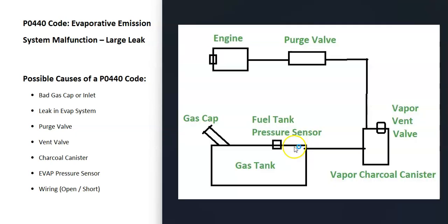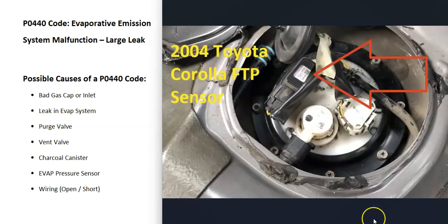The next possible cause is a bad fuel tank pressure sensor or EVAP pressure sensor. This pressure sensor reports back to the computer what's going on inside the EVAP system, so if it goes bad it might report incorrect information and the computer thinks there's a leak when there isn't. The pressure sensor can be located differently — quite often it's built into the fuel pump, but sometimes it can be on top of the gas tank.